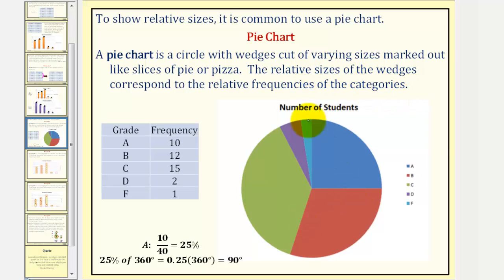So here's the pie chart. This wedge represents the A's, this wedge represents the B's, C's, D's, and F's. Notice how this is created using software, which is very common these days.